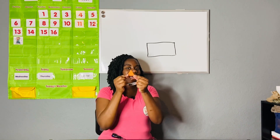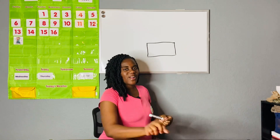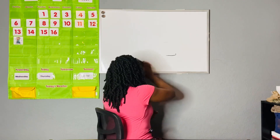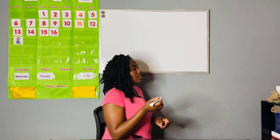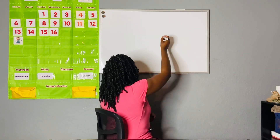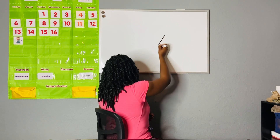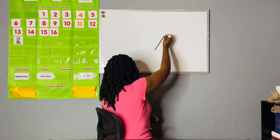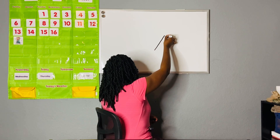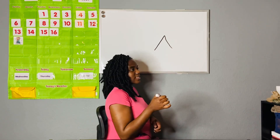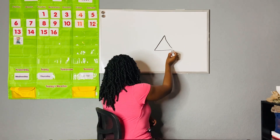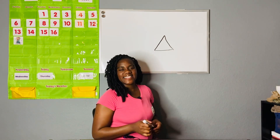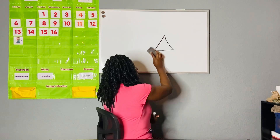Our next shape to draw is a triangle. Remember, a triangle has three sides and three corners. To draw a triangle, start at the top and make a line going down diagonally, then go back up and make a line going down sideways, then start at the bottom and go all the way to the right. That is a triangle.